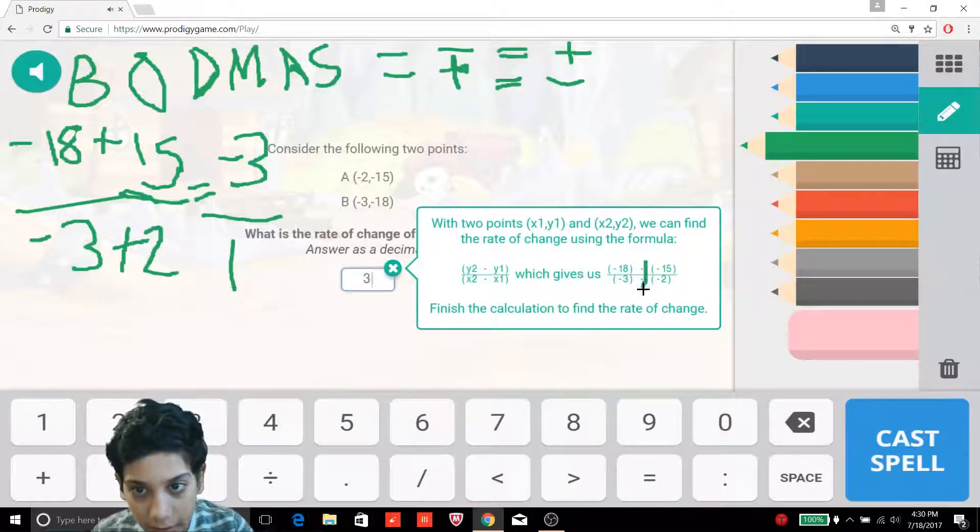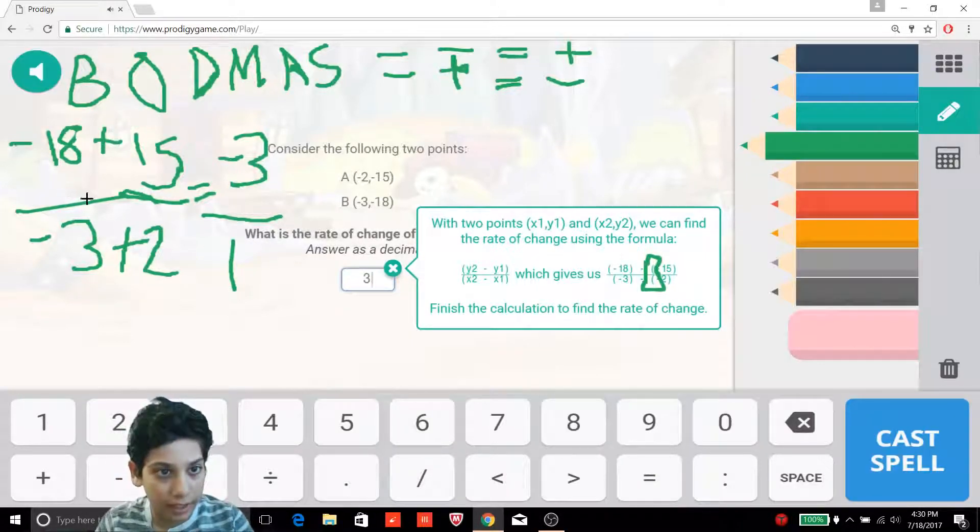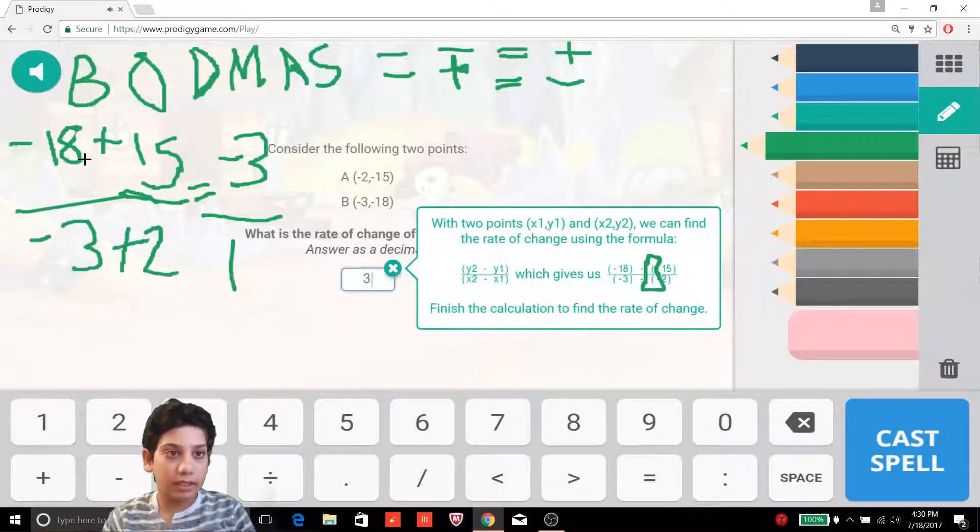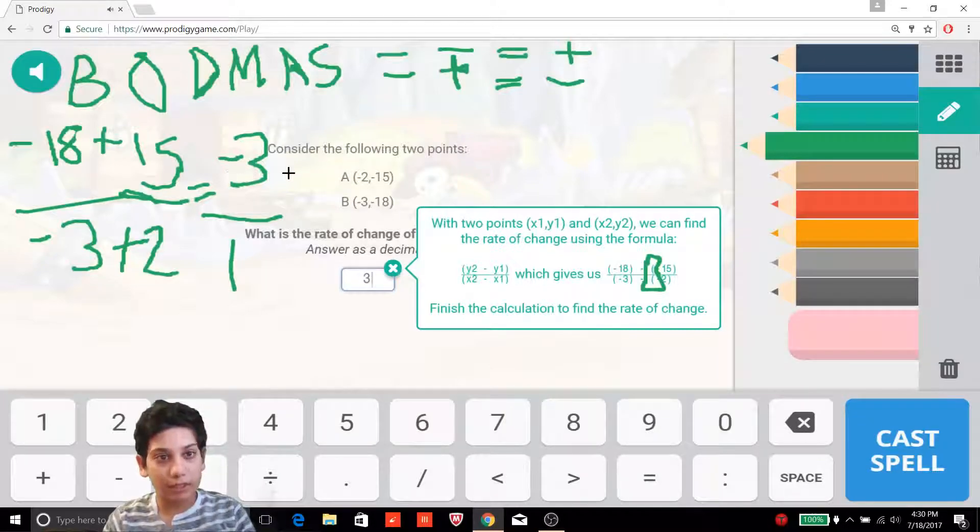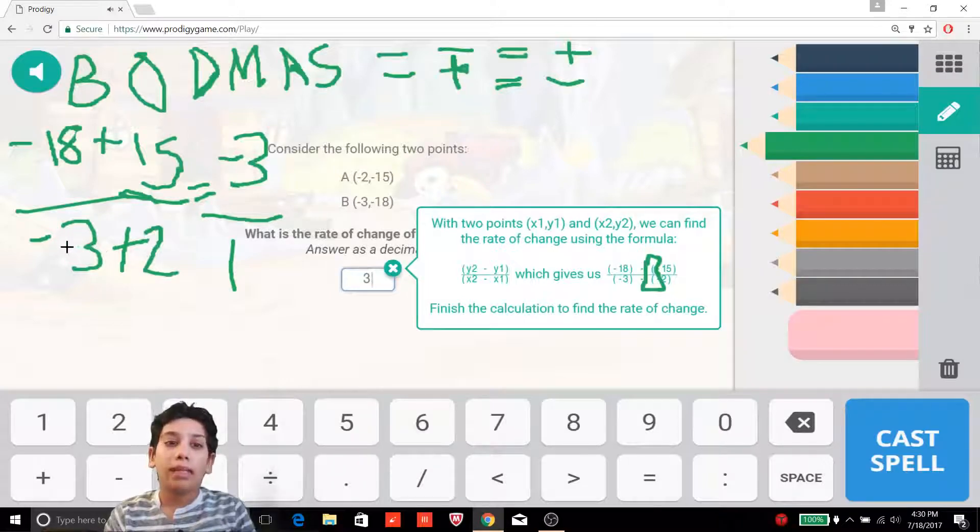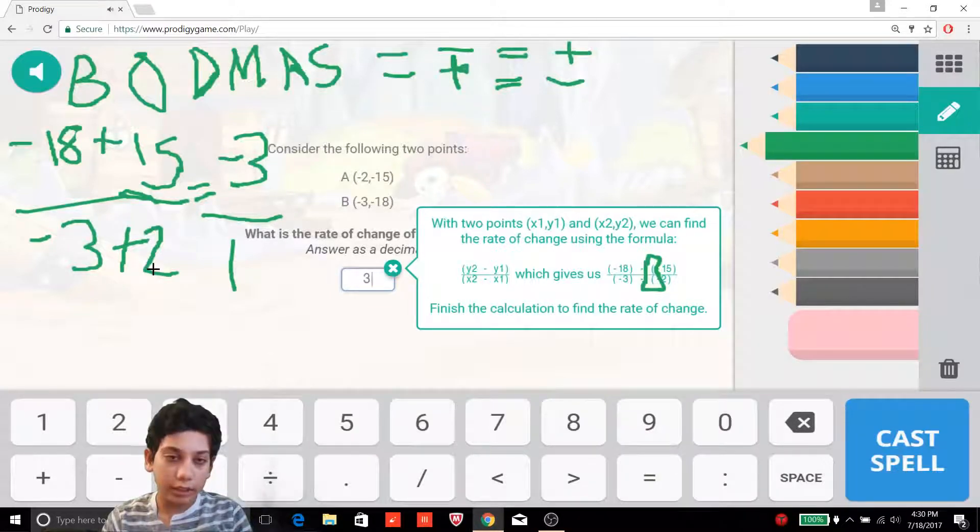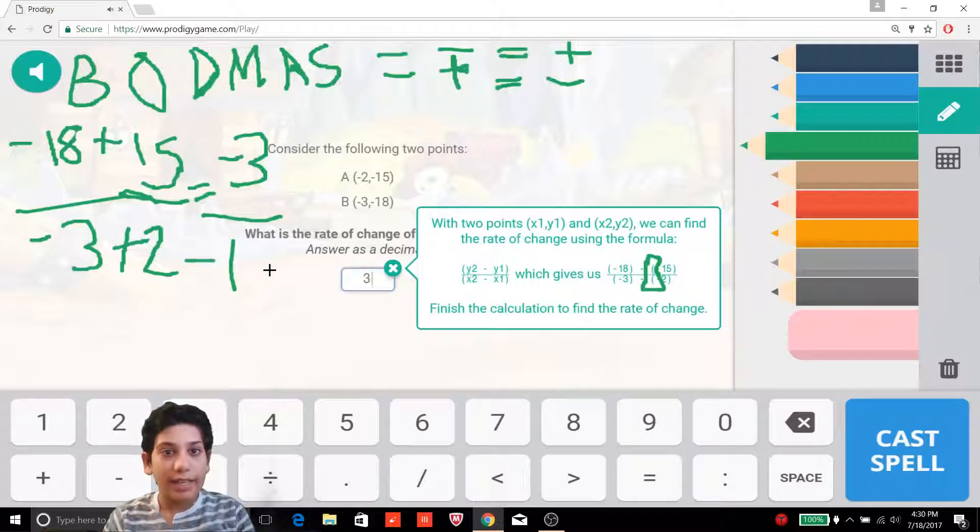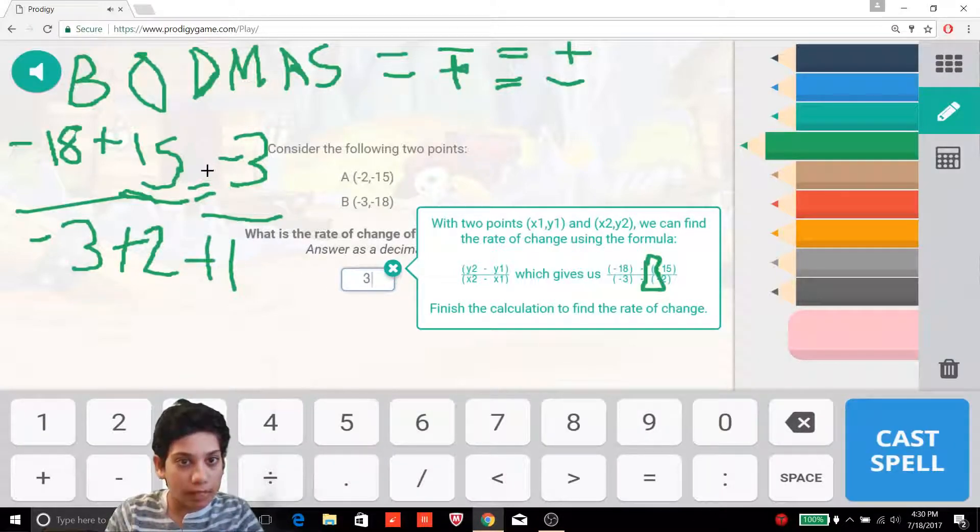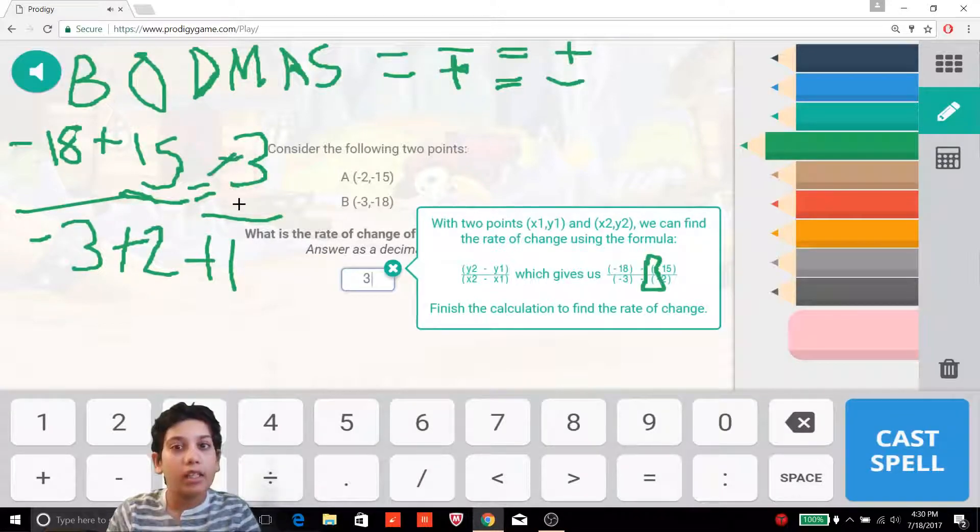Now if we do this, 15 plus minus 18 is equivalent to minus 3, then minus 3 plus 2 is equivalent to minus 1. Now to figure out how I got 3, we must take the minus away and divide 3 by 1 and we get 3. That's how I got the answer.